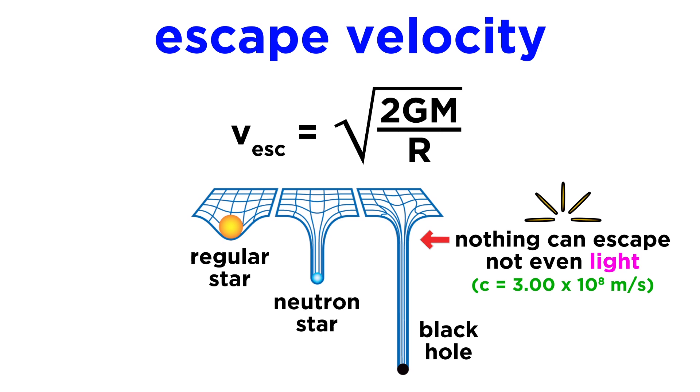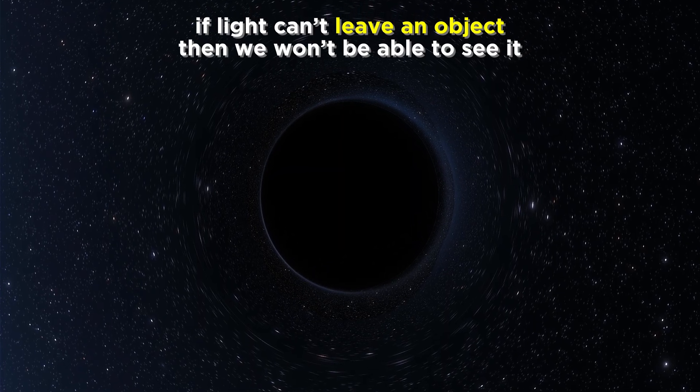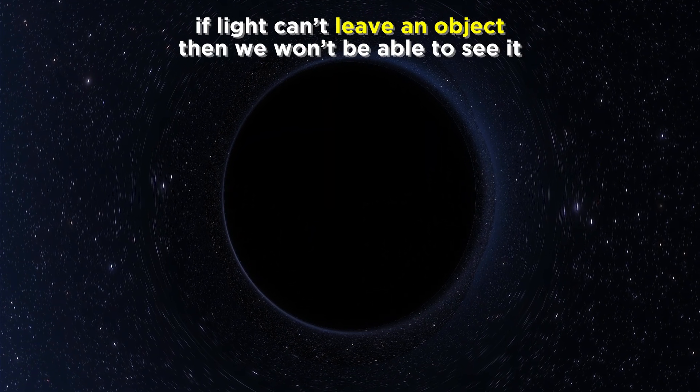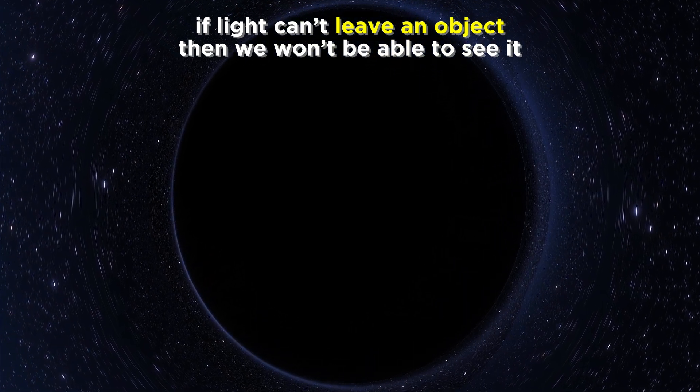Even light, which travels at the speed of light, the fastest anything can go, as we learned when we talked about special relativity in the Modern Physics course. If light can't leave an object to reach our eyes, then we can't see it, and that's why black holes are black.